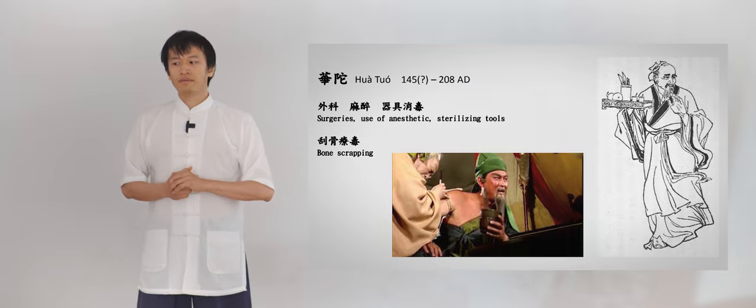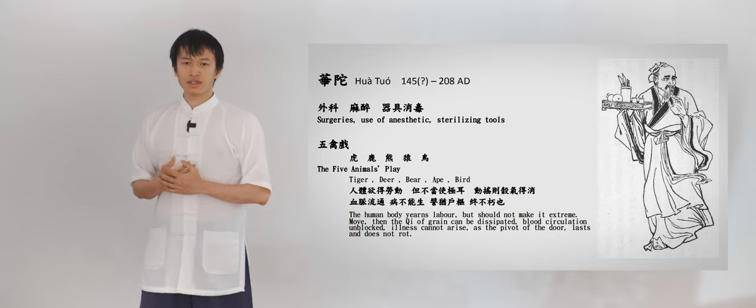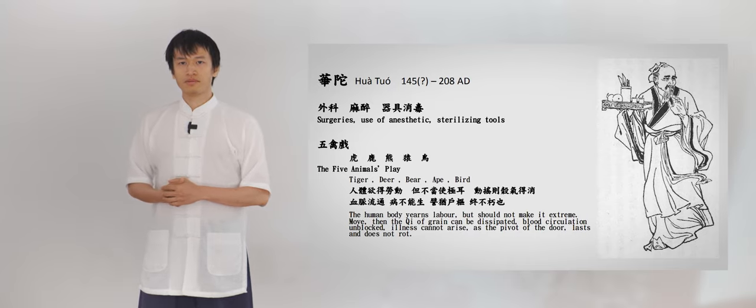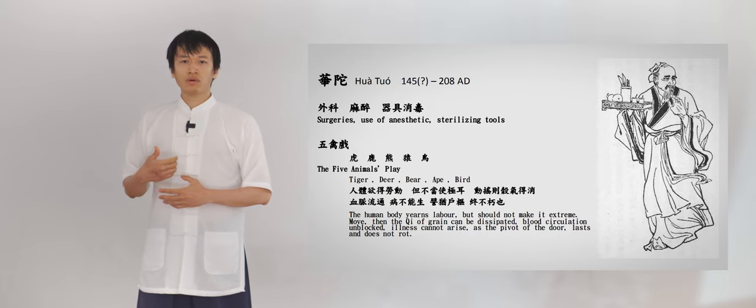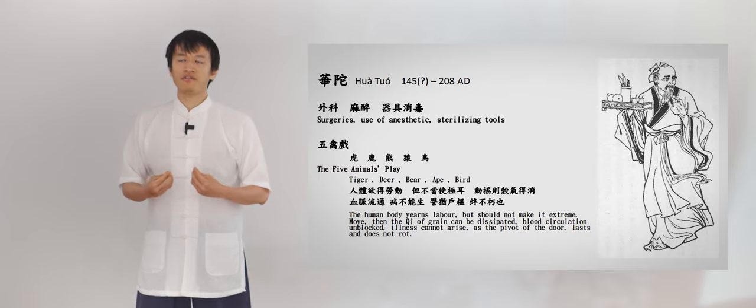Myths aside, we know that he left us with a legacy, which is Wu Qingxi. Wu Qingxi consists of the movements mimicking five animals. This is called Wu Qingxi, the five animals play. And the five animals in what's believed to be the earliest version are Hu, Lu, Xiong, Yuan, Niao, which are tiger, deer, bear, ape, and bird. This is believed to be the earliest version of five animal practice.